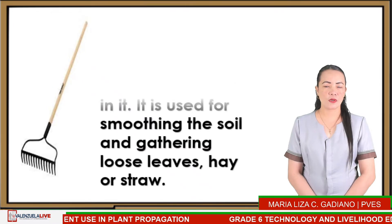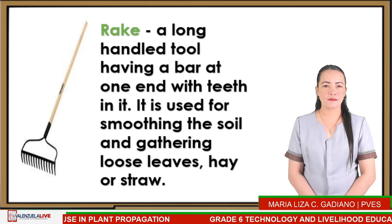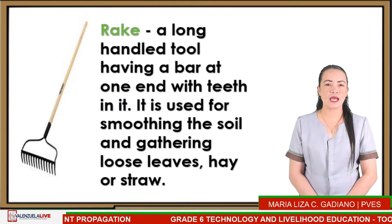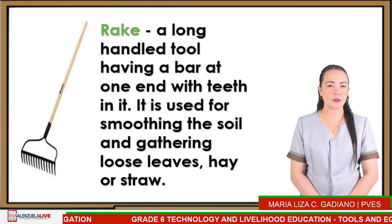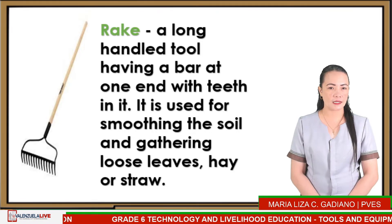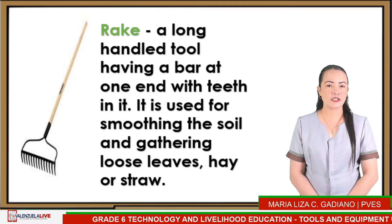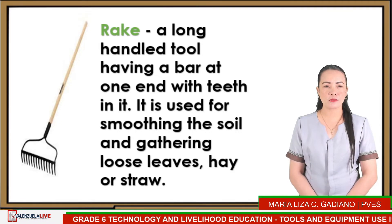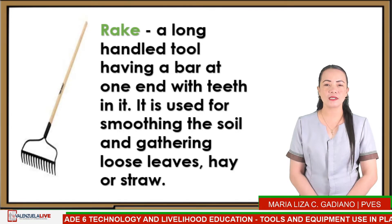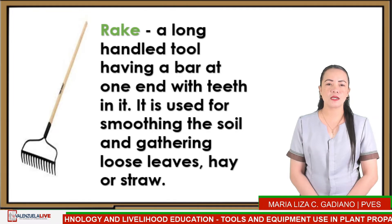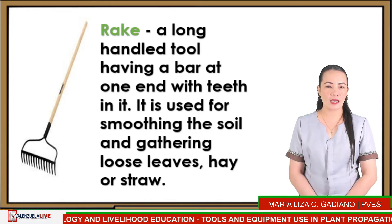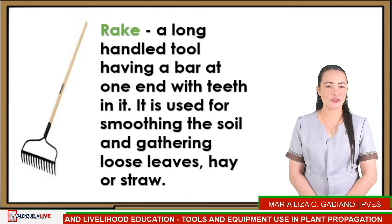The following are some of the tools and equipment used in planting trees. First is the HOE — a tool used in digging and loosening hard and dry soil. It has a thin blade across the end of a long handle. Next is RAKE — a long handle tool having a bar at one end with teeth in it.